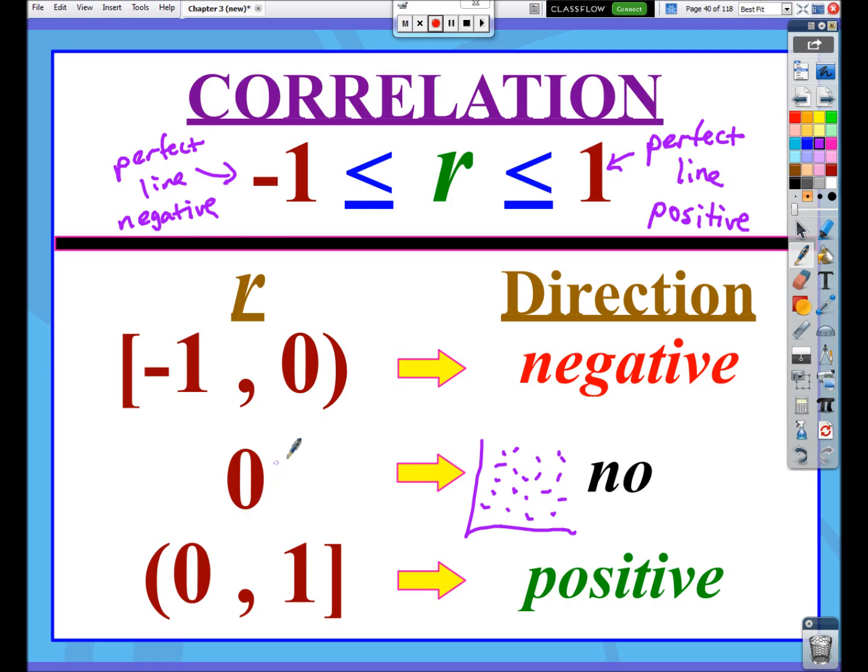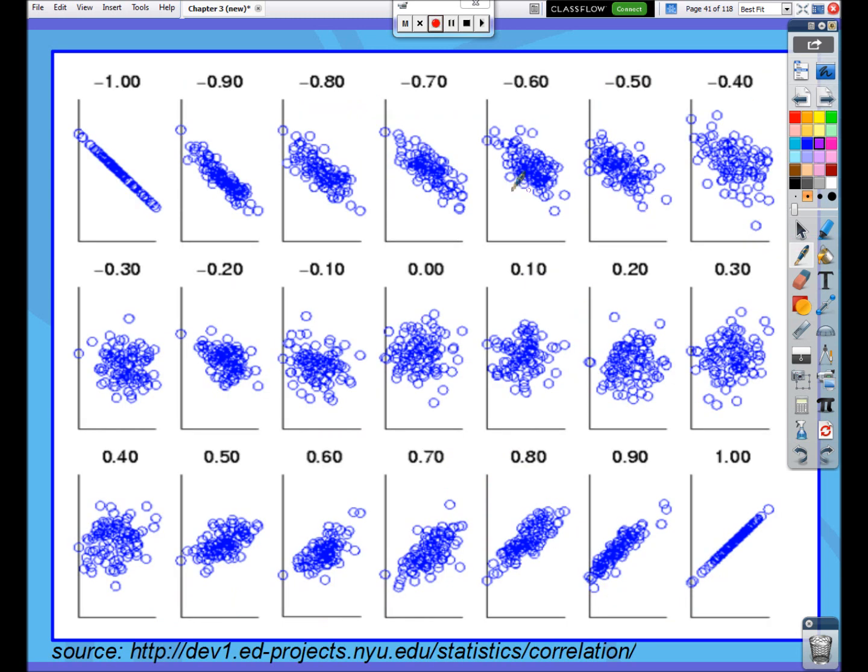There's basically no strength here. This is the weakest strength that you could have. And then anything from above 0 up to including 1, then we'll have positive direction.